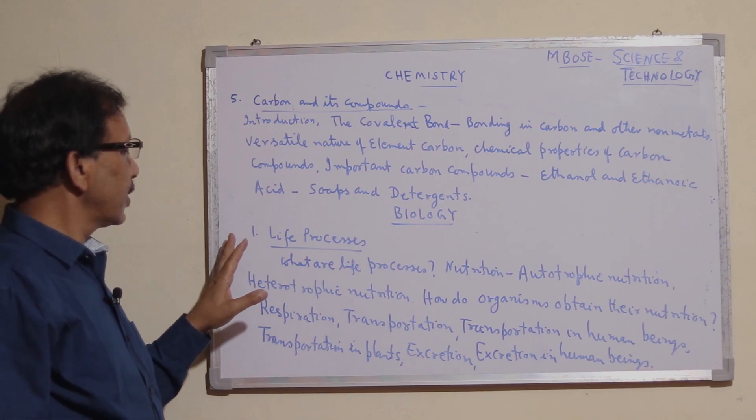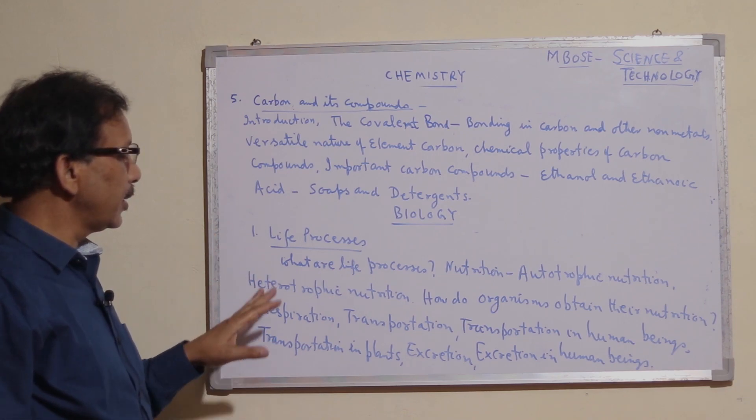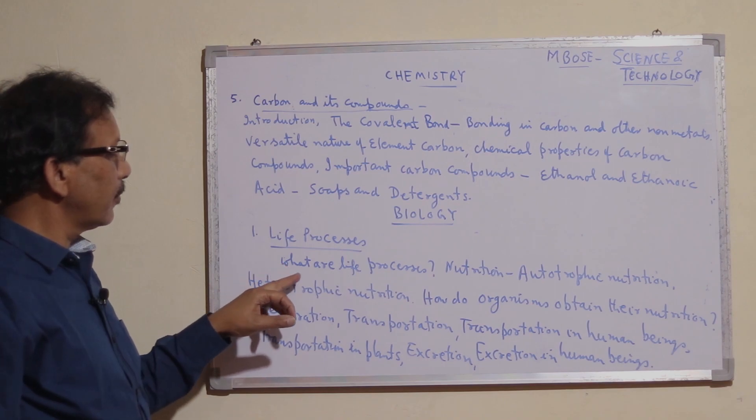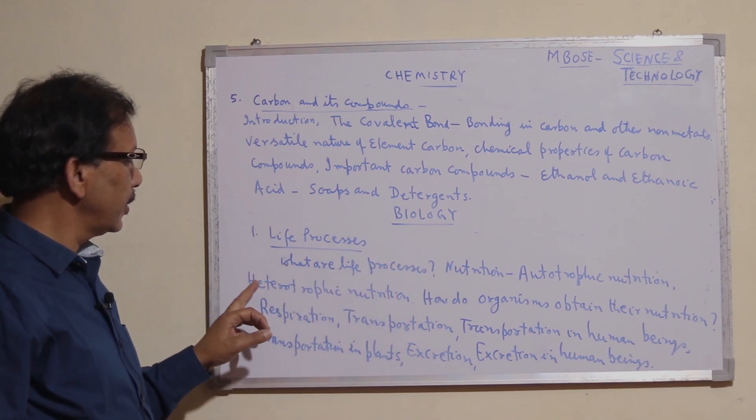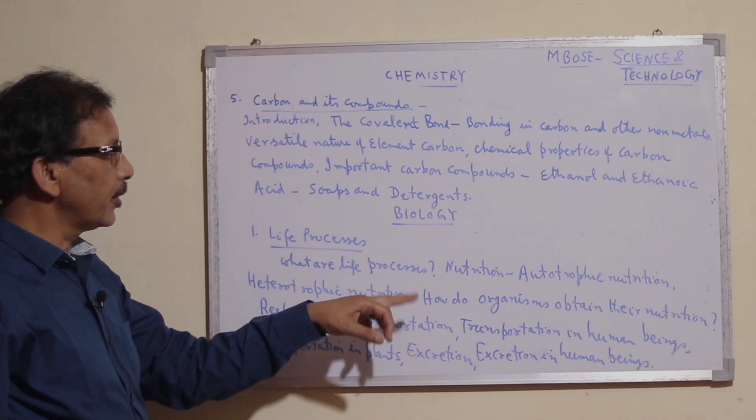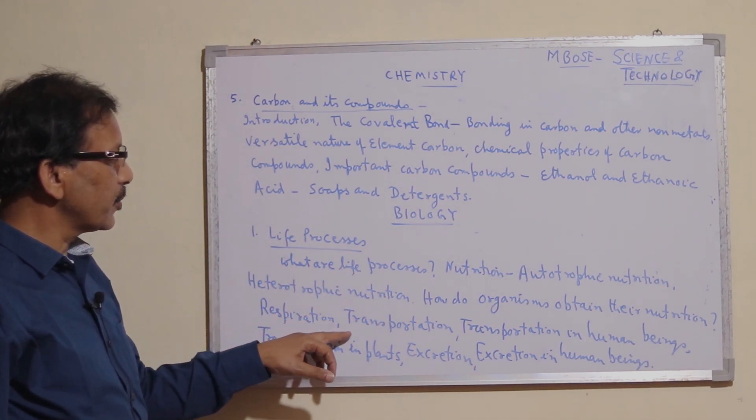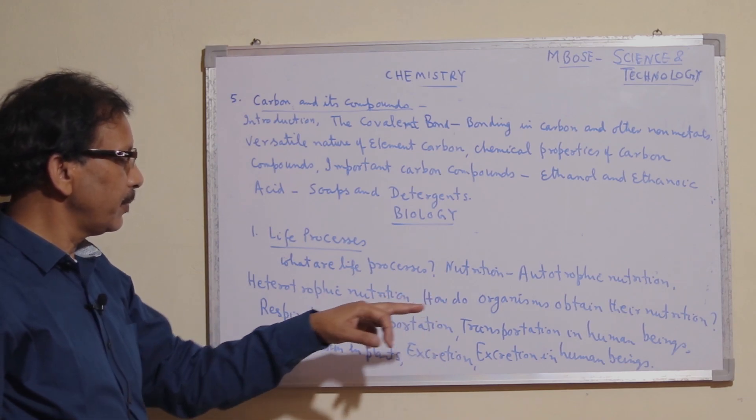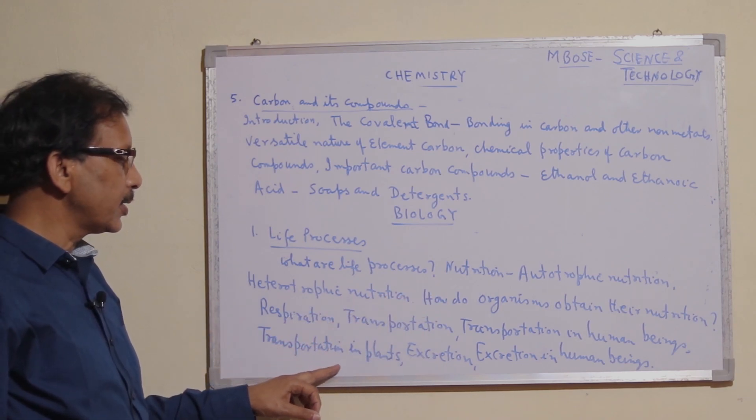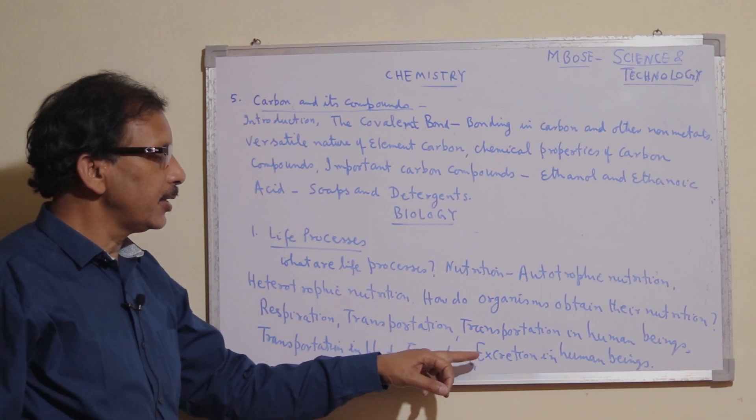In Biology, we start with life processes. The contents include what are life processes, nutrition, autotrophic nutrition, heterotrophic nutrition, how organisms obtain their nutrition, respiration, transportation in human beings and plants, excretion, and excretion in human beings.